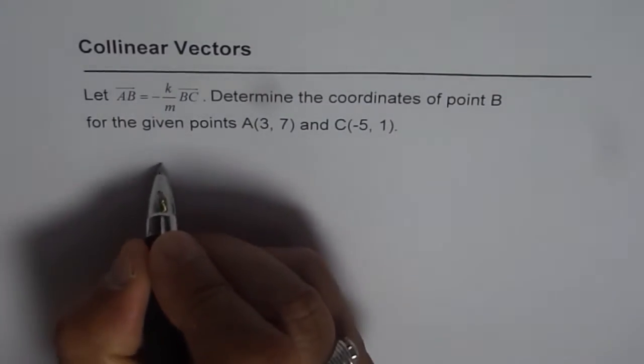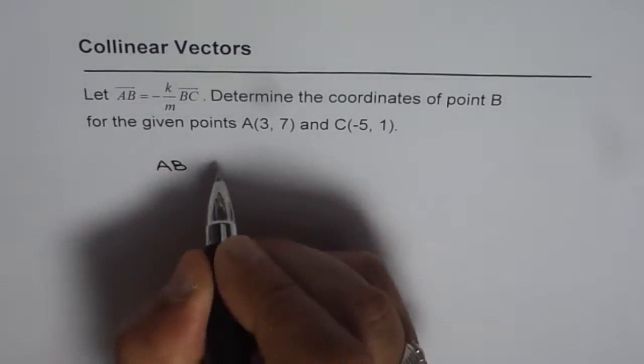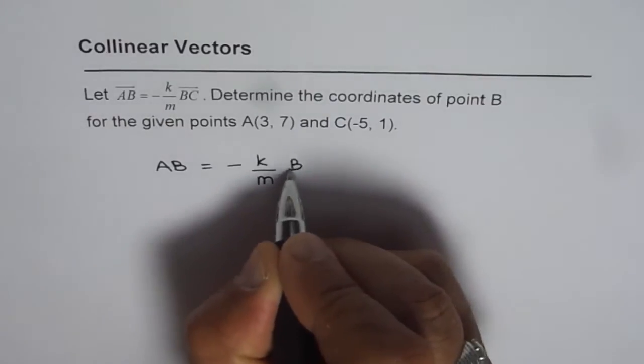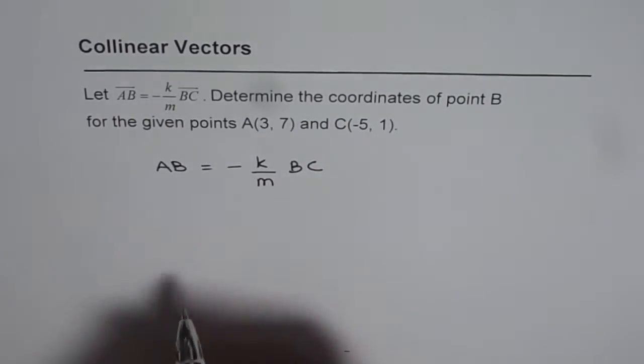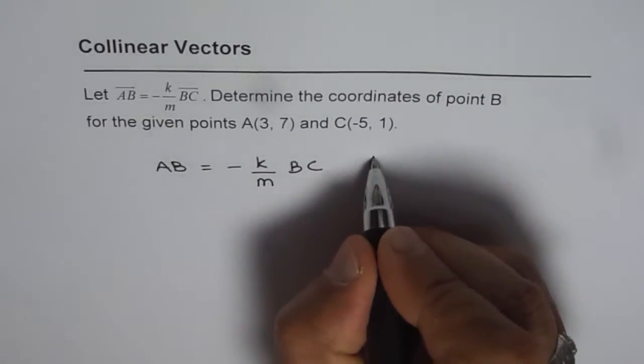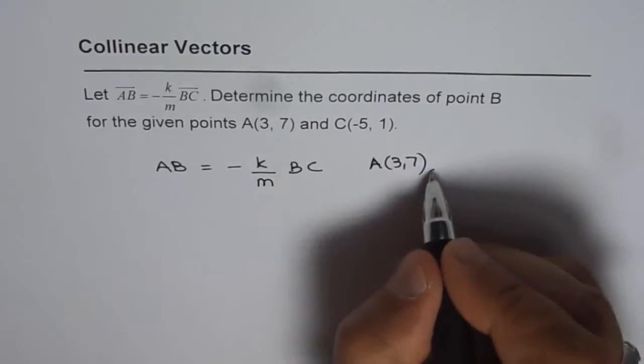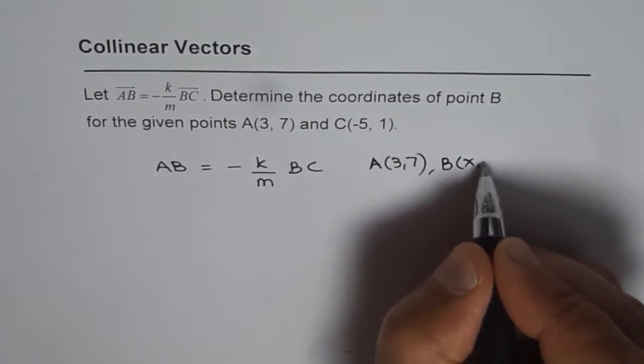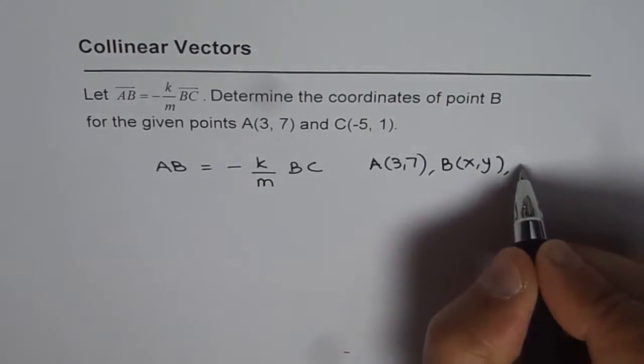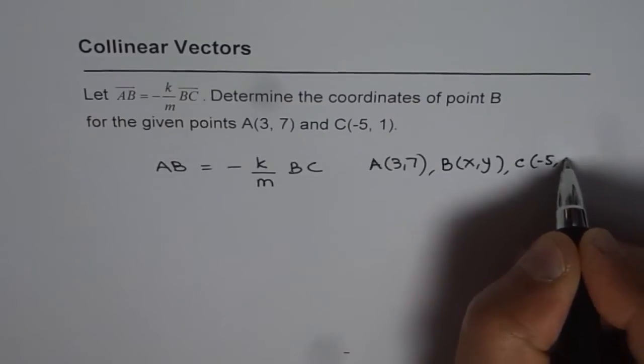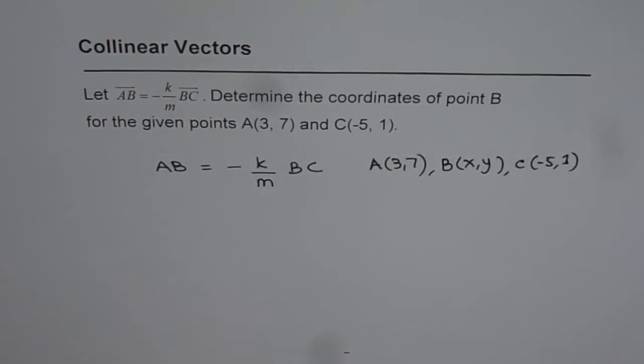Now we are given AB equals minus K over M times BC. And we are given point A as (3,7). We do not know what B is so we will assume B to be (X,Y). And C is given to us as (-5,1).